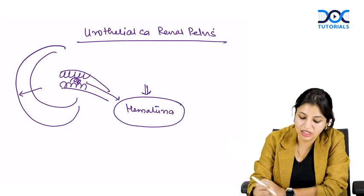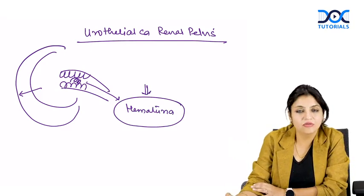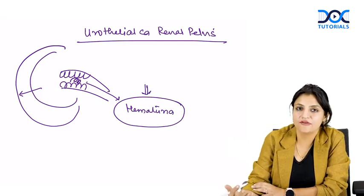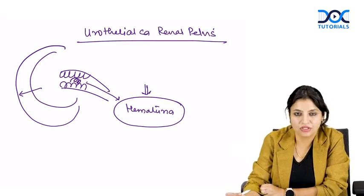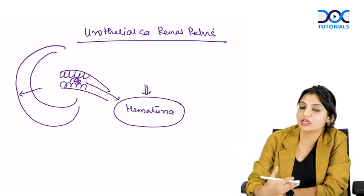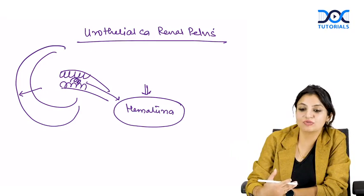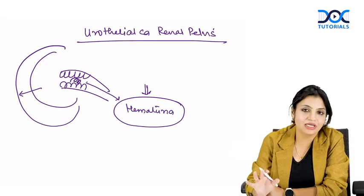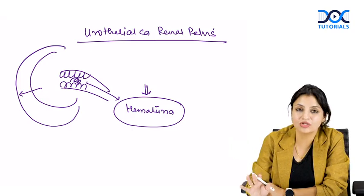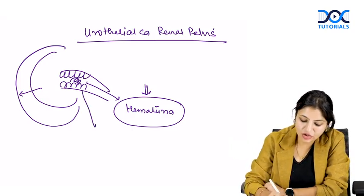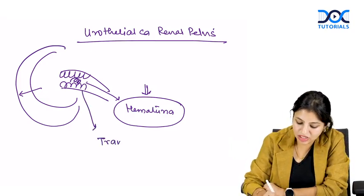Urothelial carcinomas of the renal pelvis manifest very early and are caught very early because of associated hematuria and hydronephrosis. This is in contrast to renal cell carcinomas, which are picked up later. Urothelial carcinomas are transitional cell carcinomas in nature.